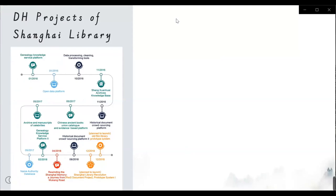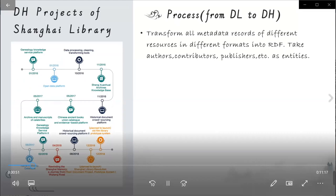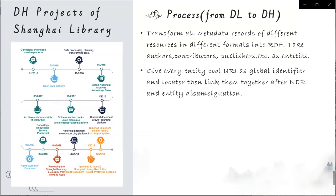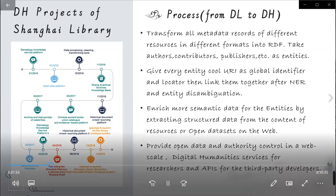Since 2015, we developed many digital humanities projects one by one. Firstly, we transform all the data records of different resources in different formats into RDF. We take authors, contributors, publishers, and so on as entities. We give every entity a core URI as global identifier and locator, then link them together after name entity recognition and entity disambiguation. We enrich more semantic data for the entities by extracting structured data from the content of resources or open datasets on the web. Finally, we provide open data and authority control at web scale.